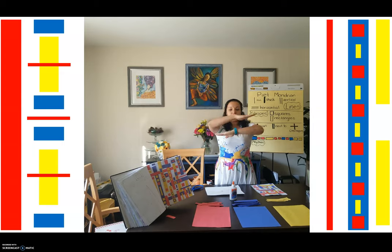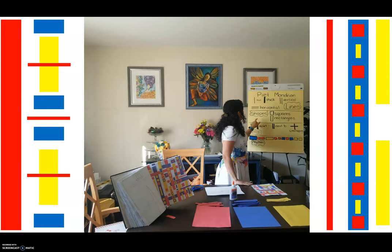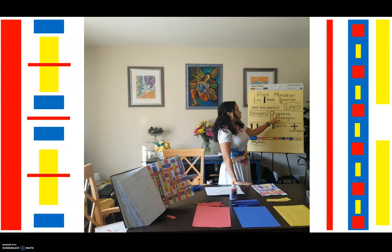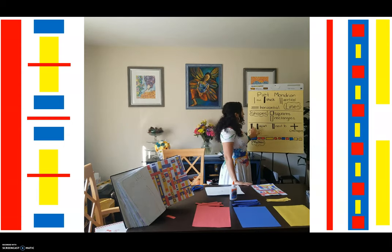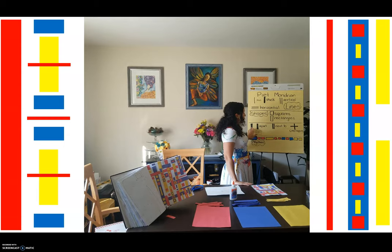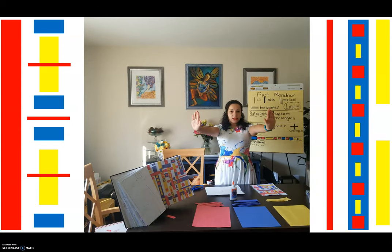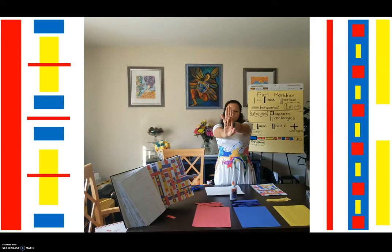Horizontal lines are lines that go straight across. He also used some shapes — squares and rectangles. His lines and squares and rectangles: some of them are apart, some of them are right next to each other, and some of them are overlapping — that means there's a shape or a line that's right over the other.